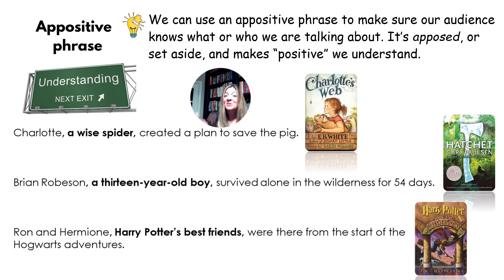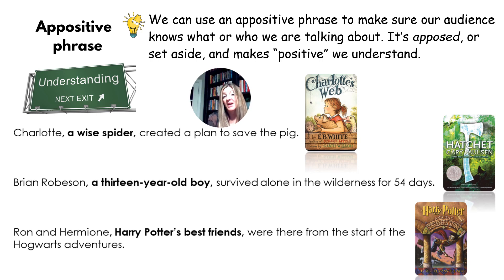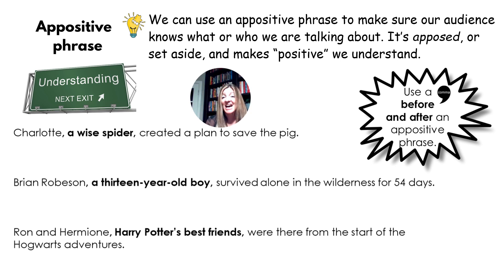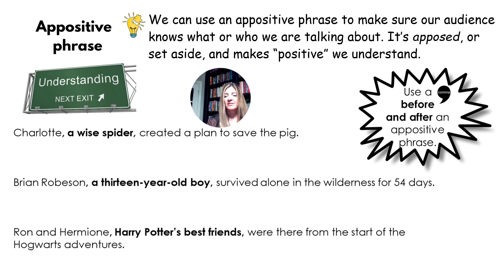If you teach kids to notice appositive phrases, to read them correctly, and to write with them, their comprehension is going to increase as is their writing. We need to use a comma before and after our appositive phrases. Notice I have 'Charlotte, comma, a wise spider, comma' — I'm literally setting that part of the sentence aside for a minute, and the comma is my visual cue for that.